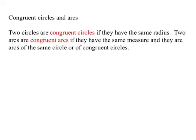Congruent circles and arcs. Two circles are congruent circles if they have the same radius. Two arcs are congruent arcs if they have the same measure, and they are arcs of the same circle or congruent circles.